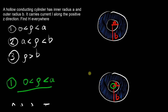For this problem we have a hollow conducting cylinder of inner radius a and outer radius b, carrying current i along the positive z-direction, which points right out of the page. In cylindrical coordinates, ρ refers to the radial distance from the z-axis in all directions on the two-dimensional cross-section.